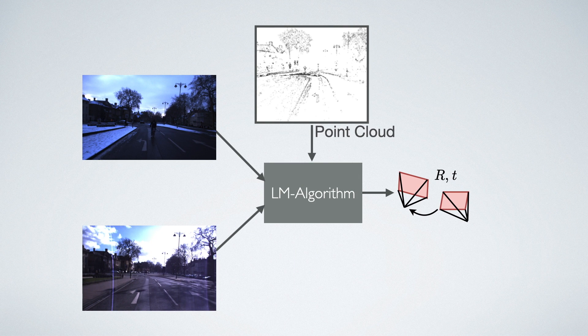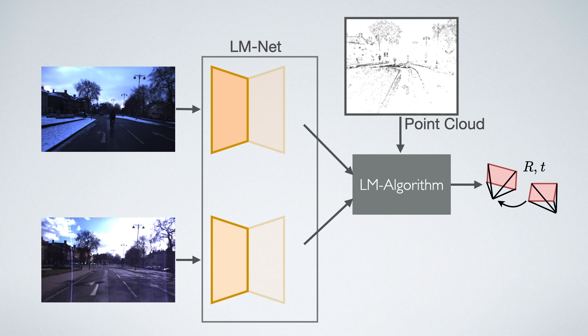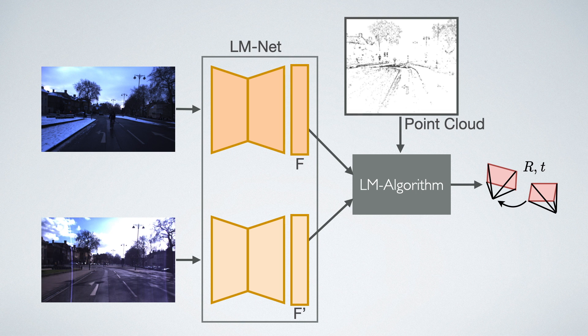So if we look at the overview again, instead of passing the images into Levenberg-Marquardt, we feed them into our LMNet which generates deep features which are used for the image alignment. These features are robust to lighting changes and also have a larger conversion space in the images which improves the performance when the initialization is bad.